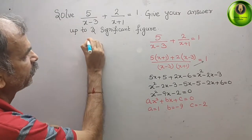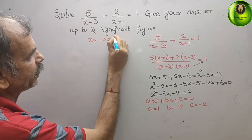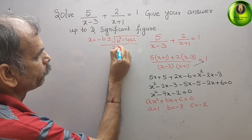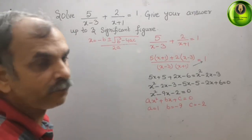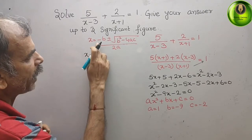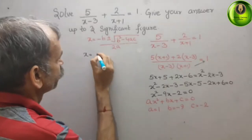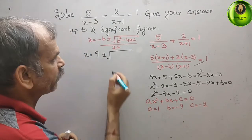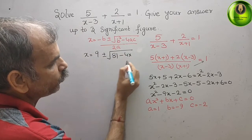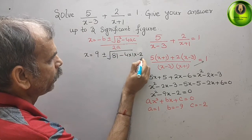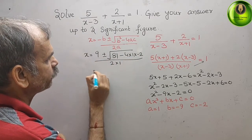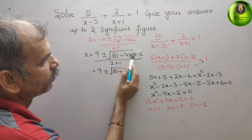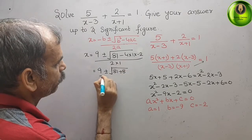The quadratic formula is: x = [-b ± √(b² - 4ac)] / 2a. Substituting: -b = -(-9) = 9. b² = (-9)² = 81. Then 81 - 4(1)(-2) = 81 + 8 = 89, divided by 2(1) = 2. So x = (9 ± √89) / 2.